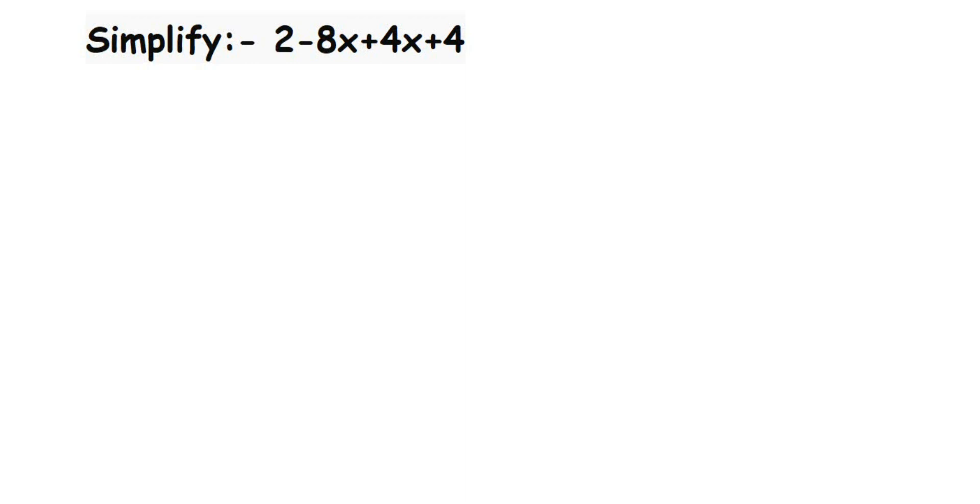Hey everyone, here's a question on algebra. The question is: simplify 2 - 8x + 4x + 4. Simplify means we have to bring it to the reduced form, where you cannot solve it further.